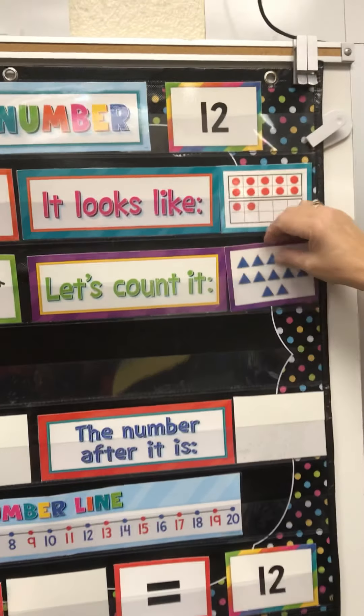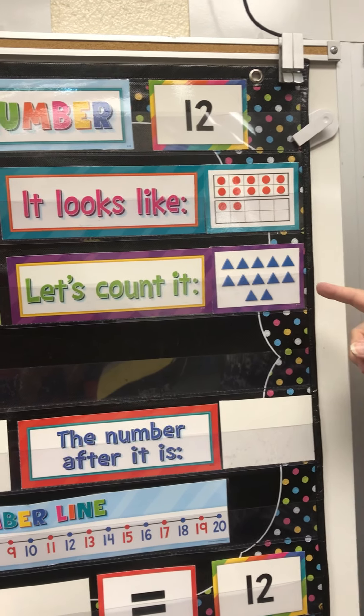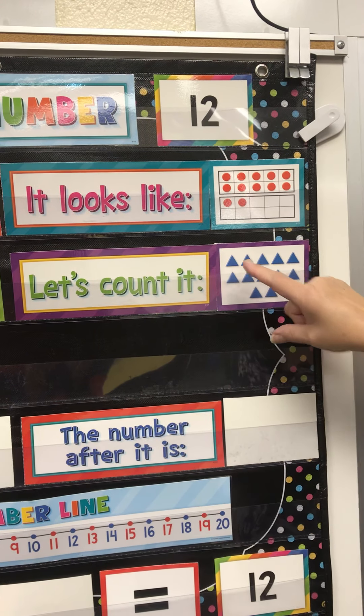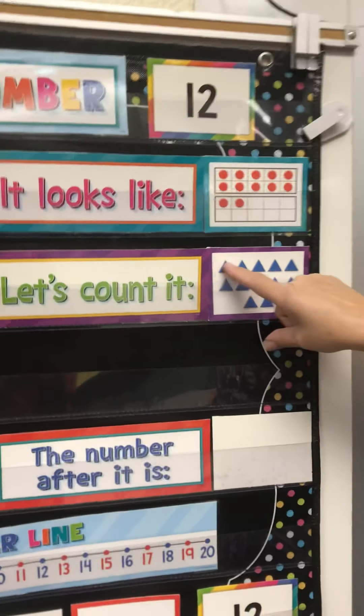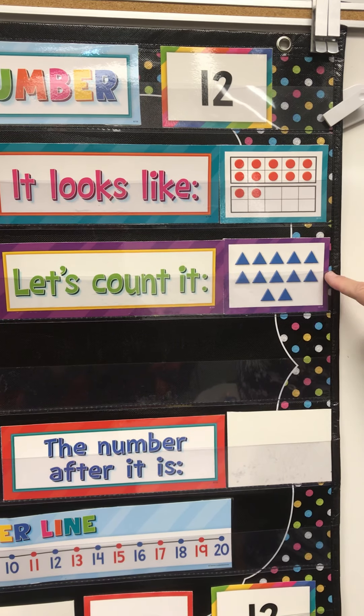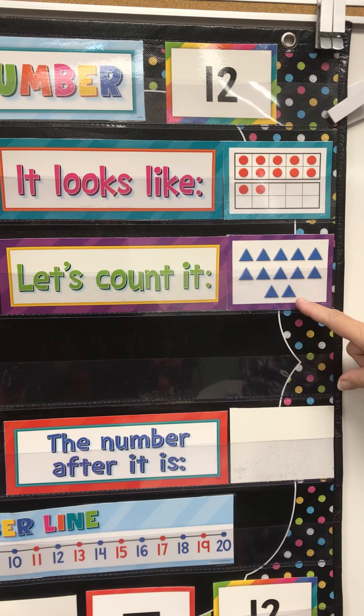And let's count our 12, what's that shape? Triangles. I want to count it like this. 5, 10, 11, 12.